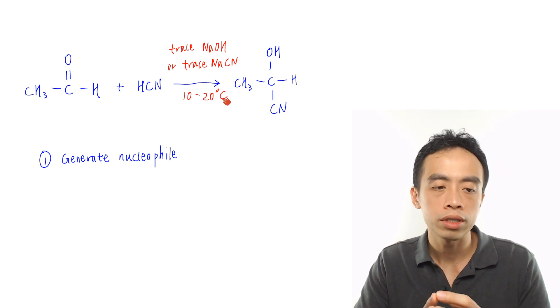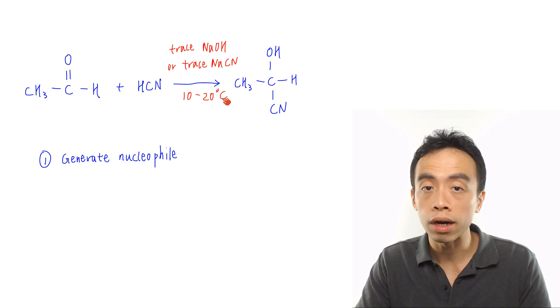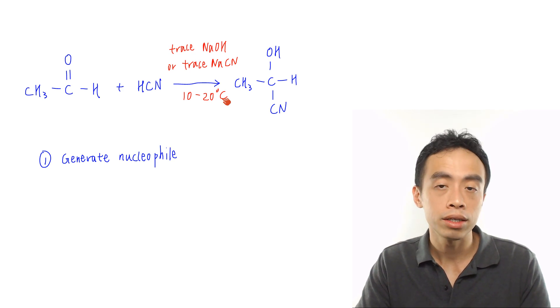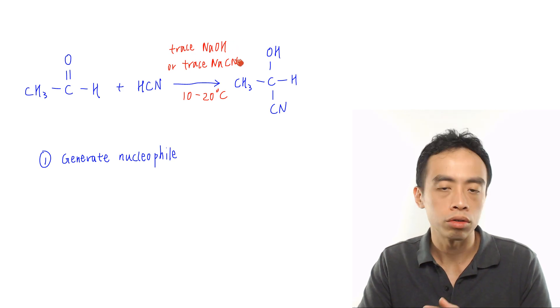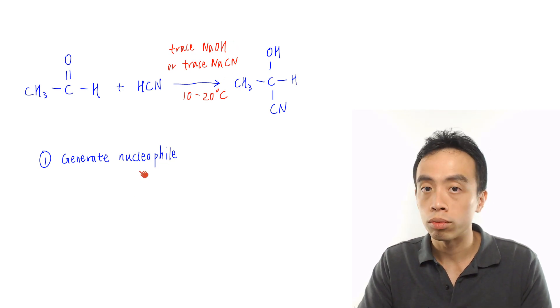In general, we have three steps. The first step is to generate the nucleophile which is CN⁻ or nitrile in this case. Depending on whether we are using trace NaOH or trace NaCN, the first step will be slightly different.